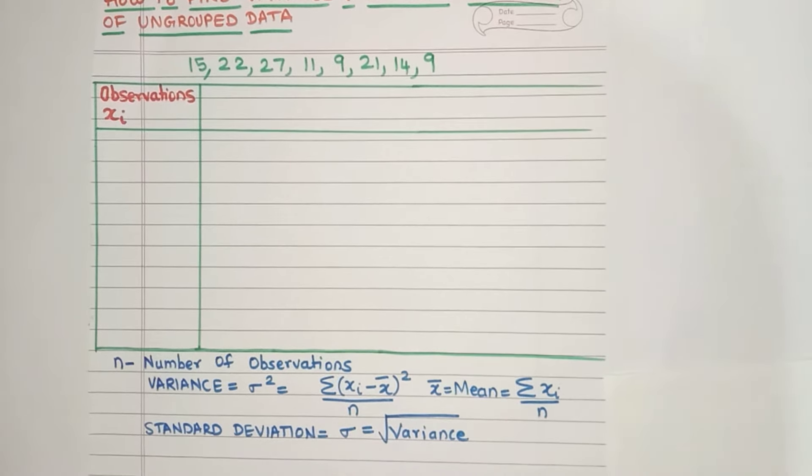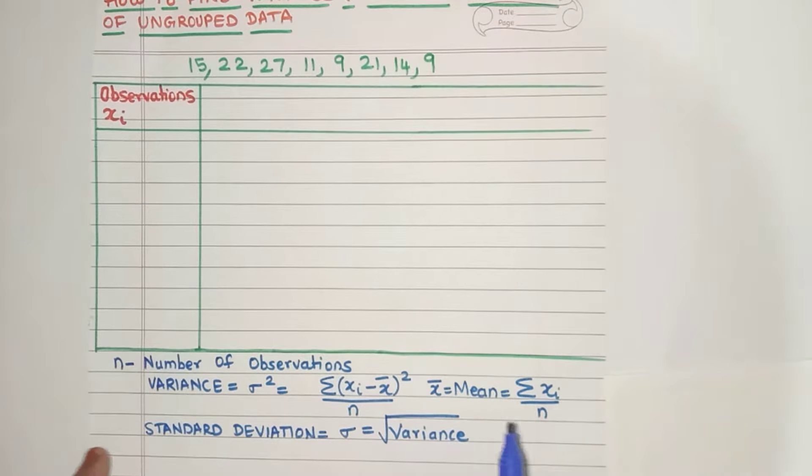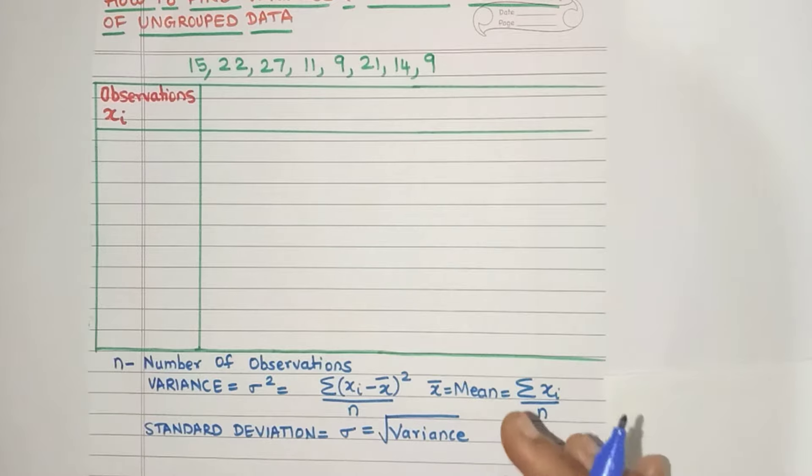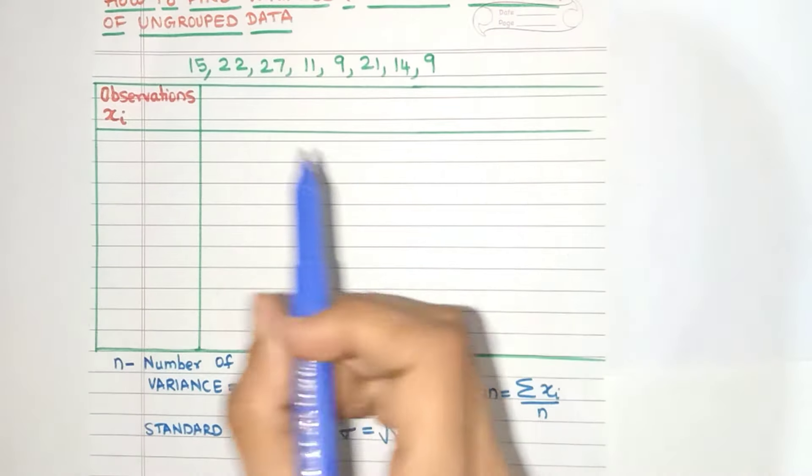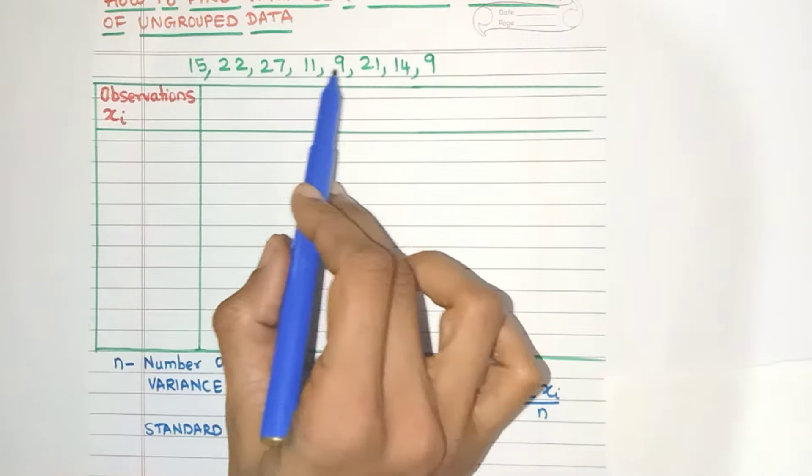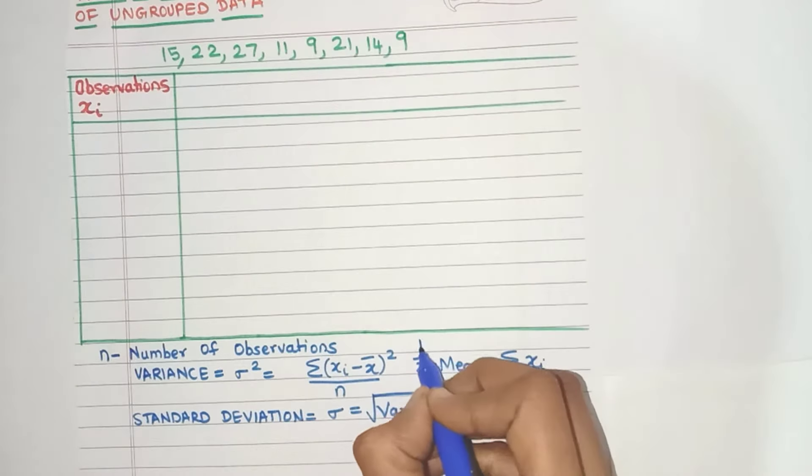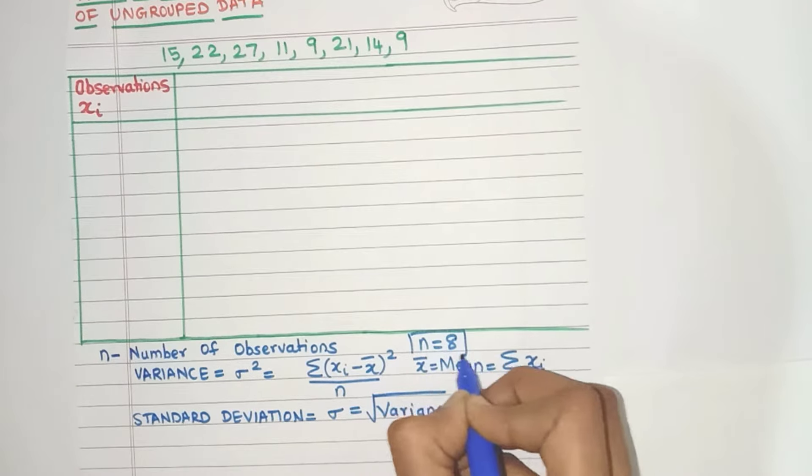Now the formula for variance and standard deviation are these. But before we can use them, we need to first find what these values are. Now what is n? n is nothing but the number of observations. So let's count how many observations are there. Yes, there are 8 observations. So our n is going to be 8.